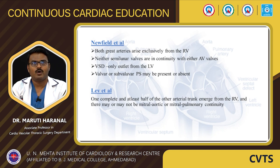According to Neufeld et al., to define DORV both great arteries should exclusively arise from the right ventricle, neither semilunar valves are in continuity with either AV valves, and the VSD is the only outlet from the left ventricle. Valvar or subvalvar pulmonary stenosis may be present or absent.